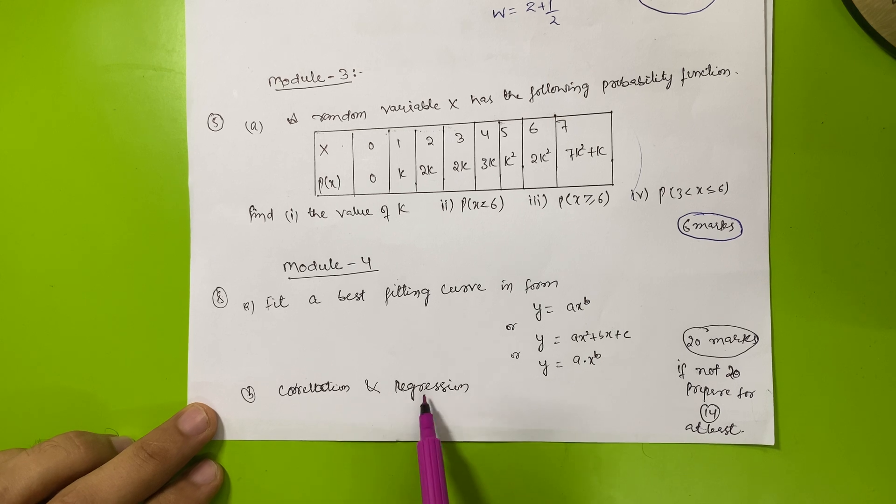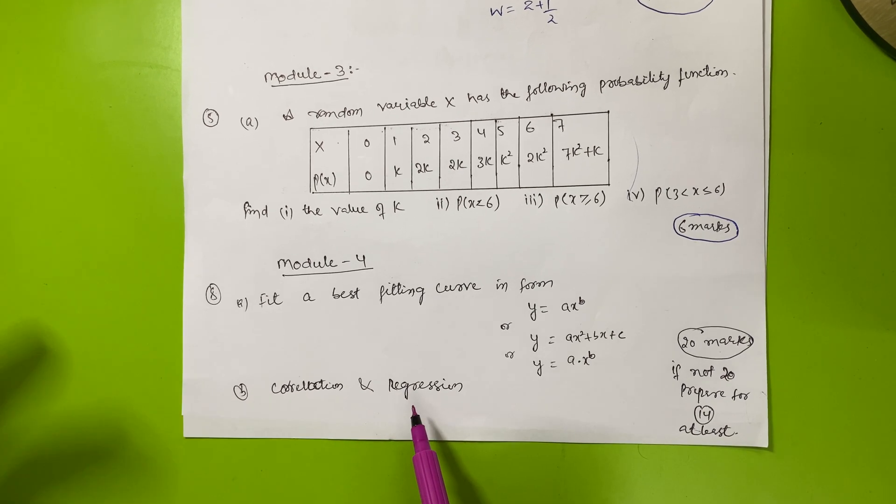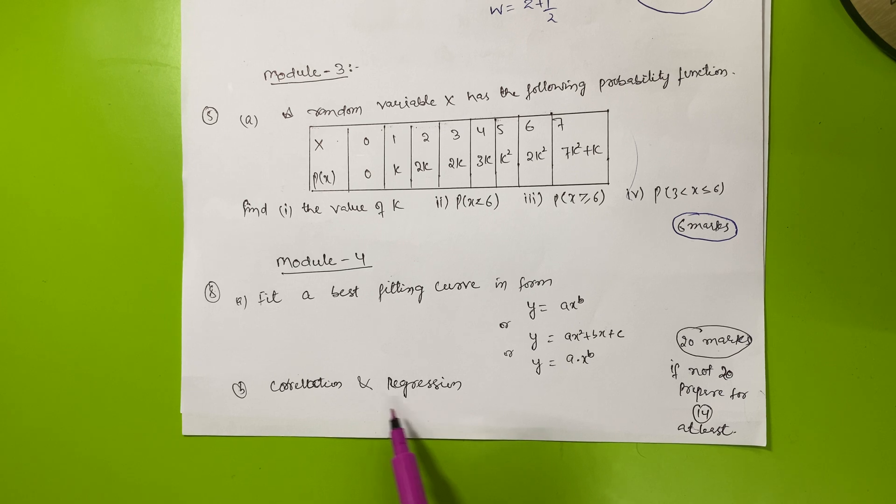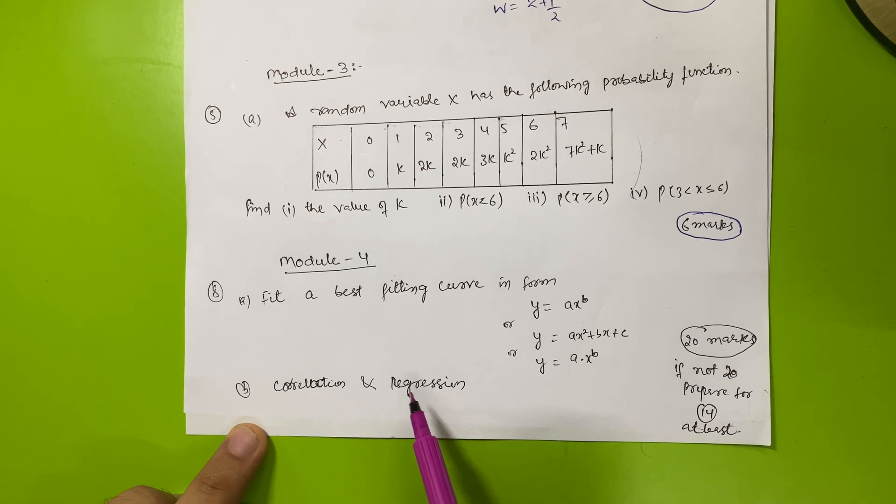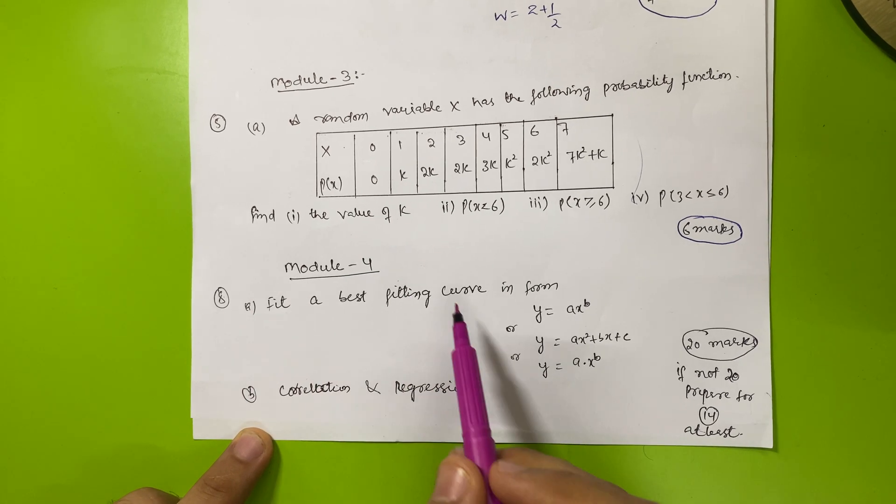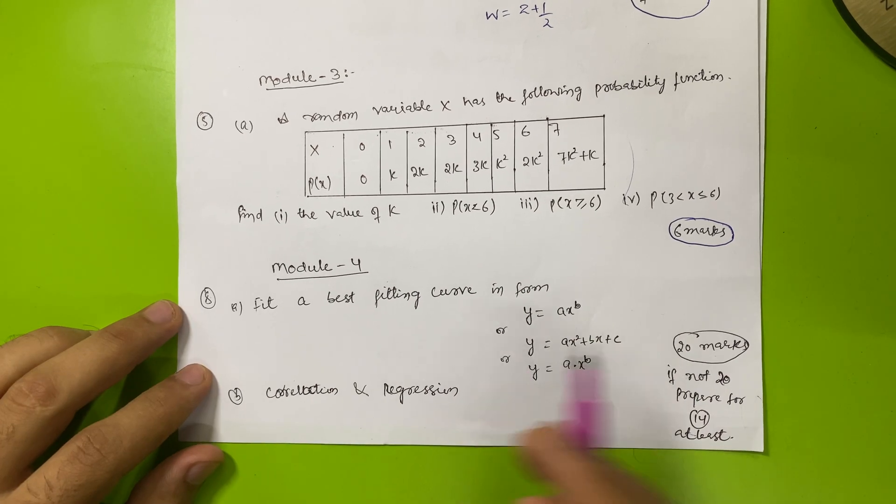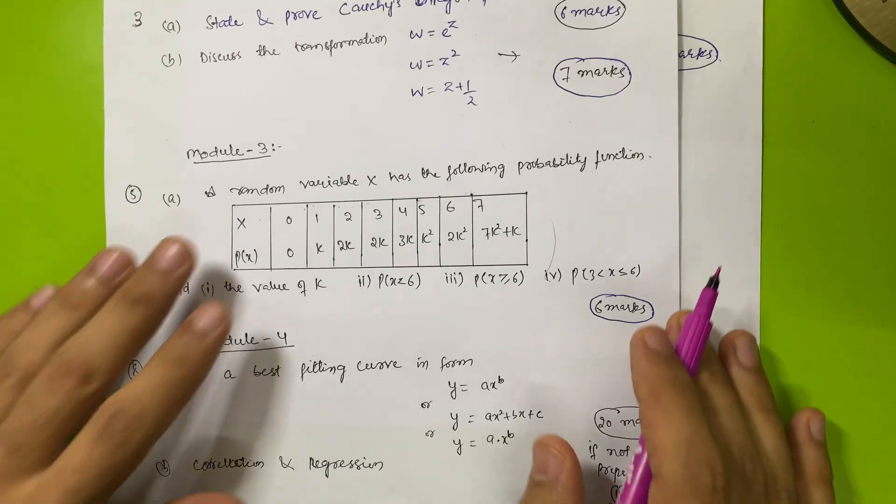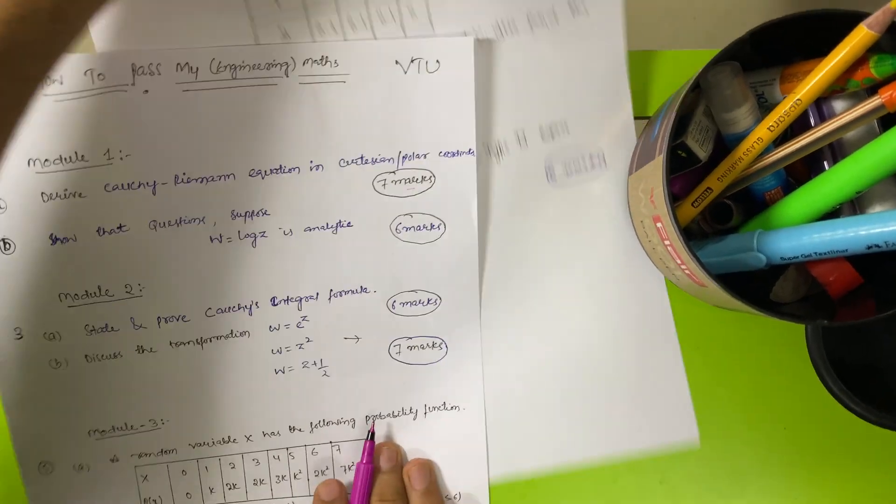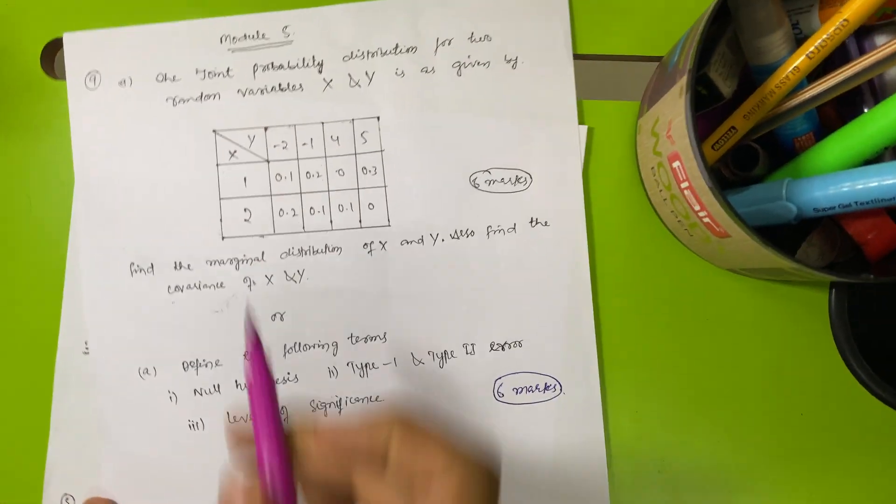Another concept is correlation and regression. On these two topics, another two questions come. You have to clear this concept of correlation and regression. It is also easy. Module four is easy compared to rest of the modules.